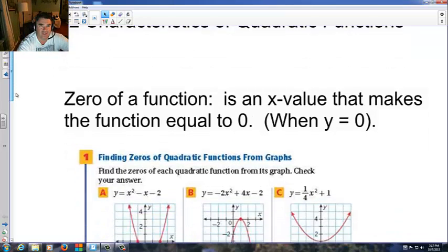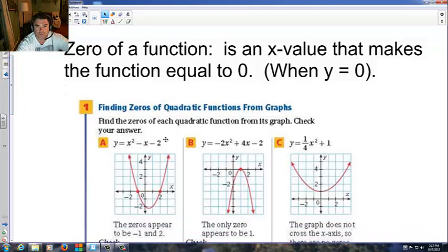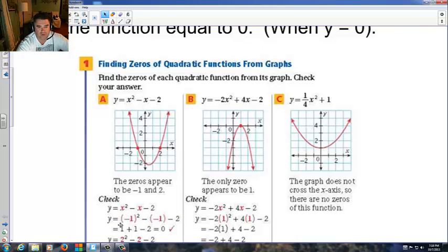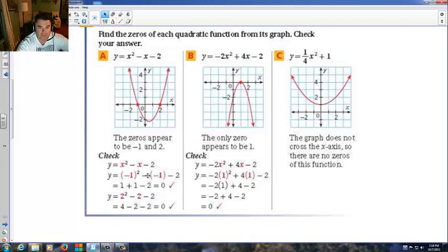Take a look here, we got this out of your textbook, finding zeros of quadratic functions from graphs. This first one says x squared minus x minus 2. Notice the general shape as it comes down. Notice how it hits the x-axis twice. It hits it once here and hits it once there. Now, it says the zeros appear to be at negative 1 and 2.